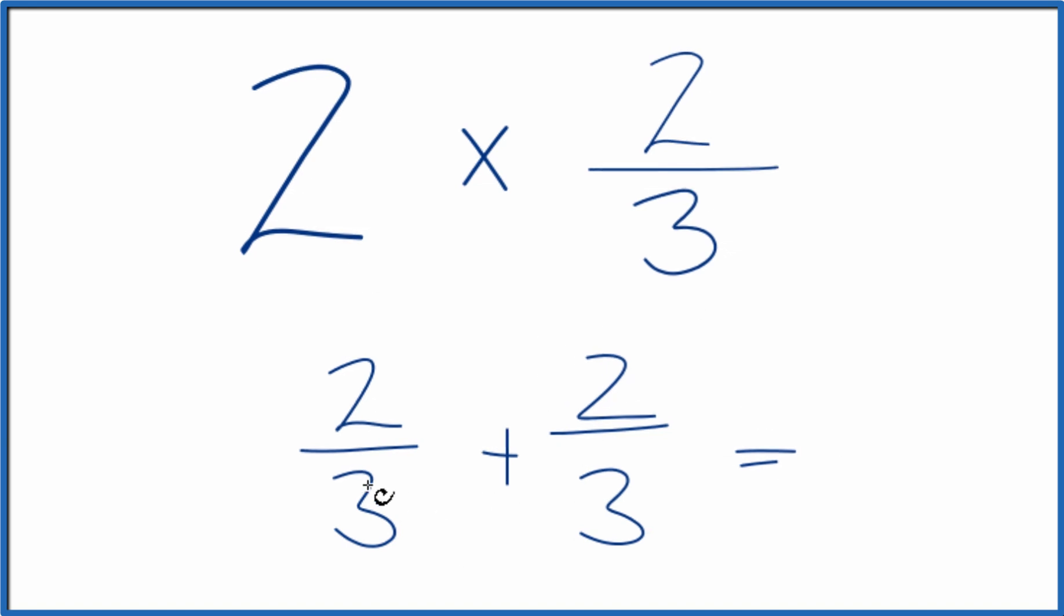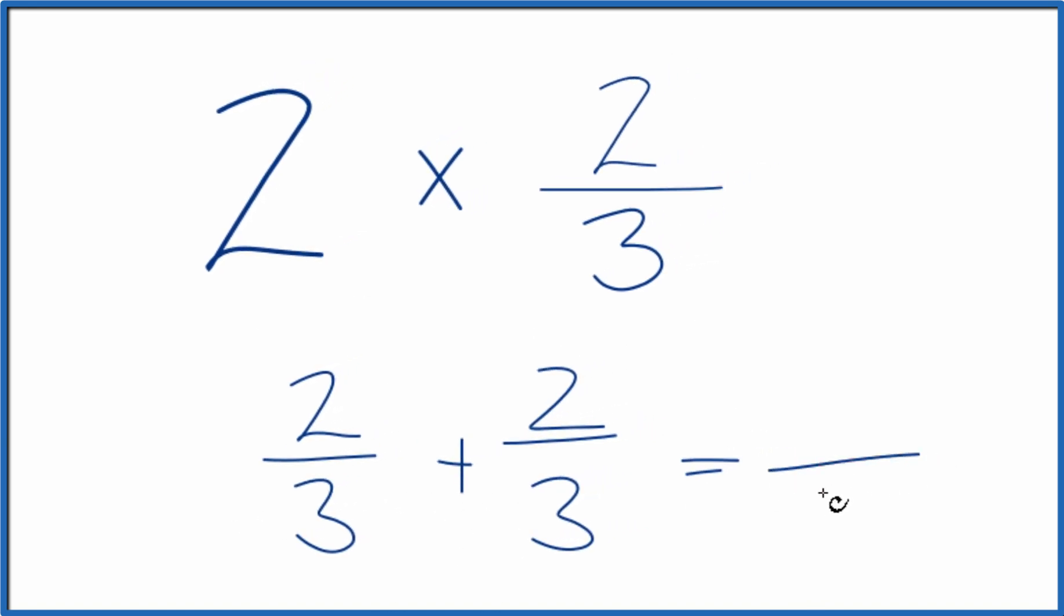With fractions, when we're adding them, we have the same denominator. We just bring that across, add the numerator, four-thirds.